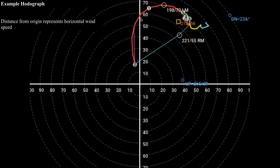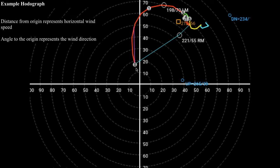At some point we go up to a level where we have a due south wind, and at another level we have a southwesterly wind. Distance from the origin represents the strength of the horizontal wind, and the angle represents the direction of the wind. So at this particular point, drawing a line to the origin gives a south-southeasterly wind; at this next point, a southerly wind; and connecting this point over here to the origin gives a southwesterly wind.